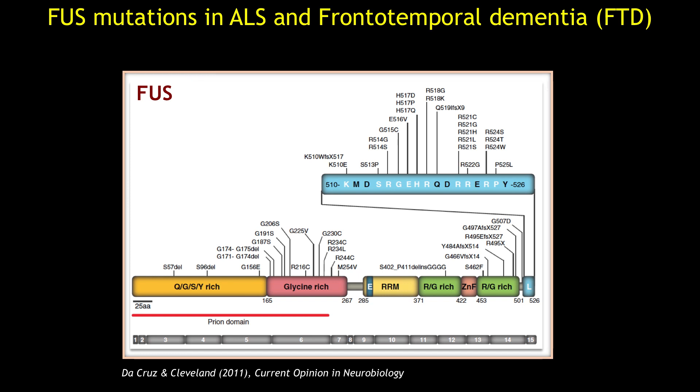FUS is an RNA-binding protein primarily found in the nucleus with multiple proposed functions. However, in ALS patients, mutant FUS can be mislocalized and aggregated in the cytoplasm of neurons and glia. FUS aggregation is also a hallmark of other neurodegenerative disorders, including forms of frontotemporal dementia, or FTD, which is actually the second most common form of dementia after Alzheimer's disease.